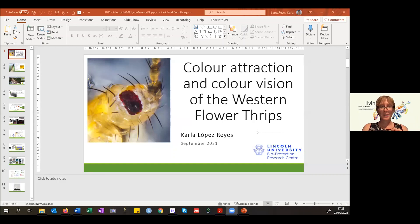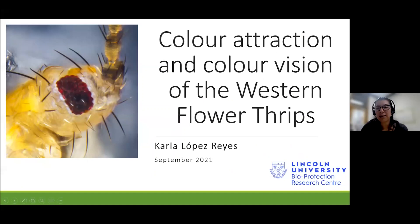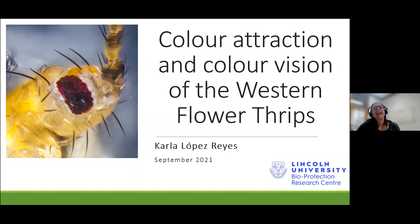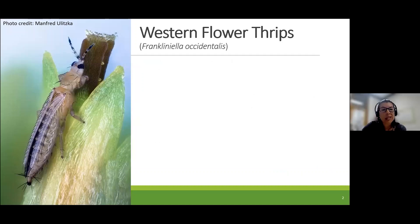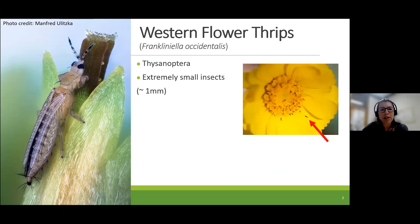Next speaker is Carla Lopez, who will talk about color attraction and color vision of the Western flower thrips. Thrips are insects belonging to their own order Thysanoptera, and are extremely small, measuring around 1 to 1.5 millimeters.